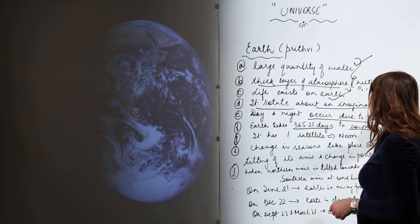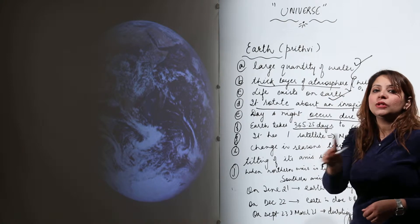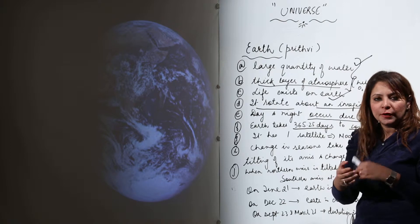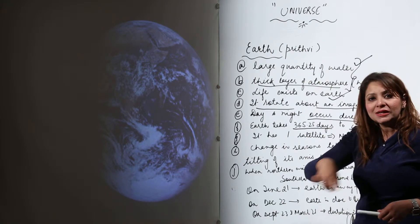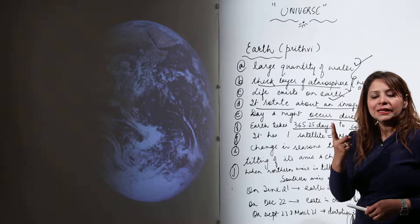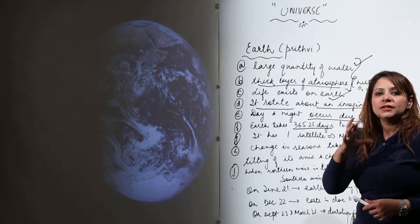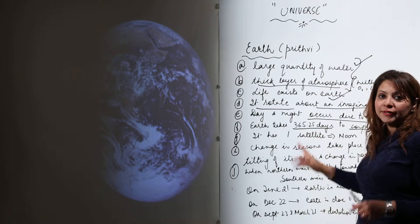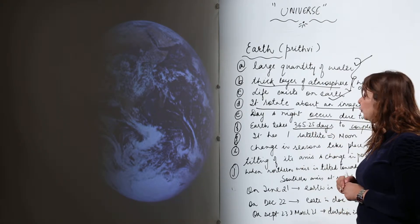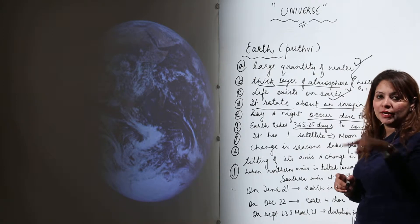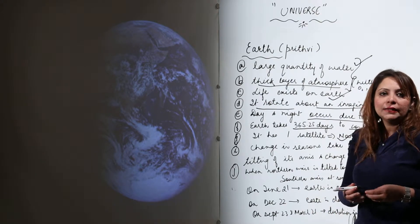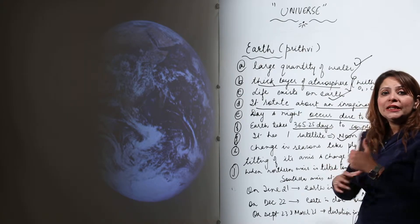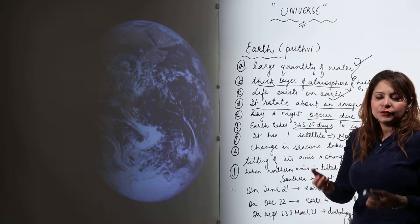Earth takes 365.25 days to complete one revolution around the sun. Its rotation about its own axis causes the change in day and night, while the revolution takes 365.25 days to complete. Earth also has one heavenly body revolving around it — that is the Moon, its natural satellite.